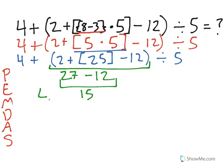So now I'm left with 4 plus 15, divided by 5. Remember these all have to come down because we have not solved them yet.